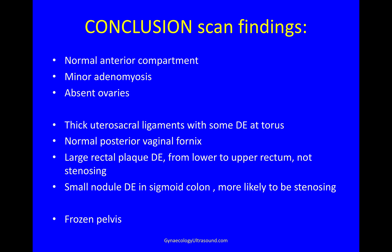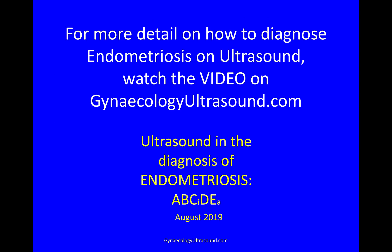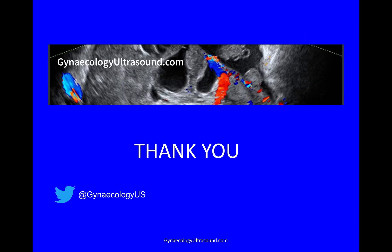My conclusion of this scan was that there was a normal anterior compartment, minor adenomyosis, and absent ovaries. There was a large rectal plaque of deep endometriosis extending from the lower to the upper rectum, which does not appear to be stenosing, and a small nodule of deep endometriosis in the sigmoid colon, more likely to be stenosing, with a frozen pelvis. For more detail on how to diagnose endometriosis on ultrasound, there's a video on the website. Thank you.